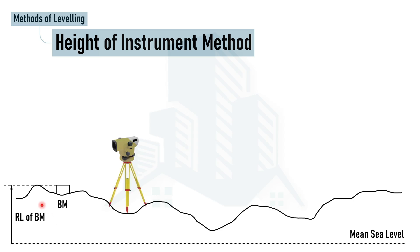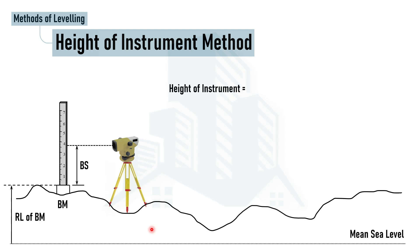To start the leveling process, first we set up the instrument. As discussed in previous videos, we take the staff reading at the benchmark first — placing the staff at the benchmark and taking the staff reading, which we call the back sight reading. Now, the height of instrument is calculated as: reduced level of benchmark plus the back sight reading.